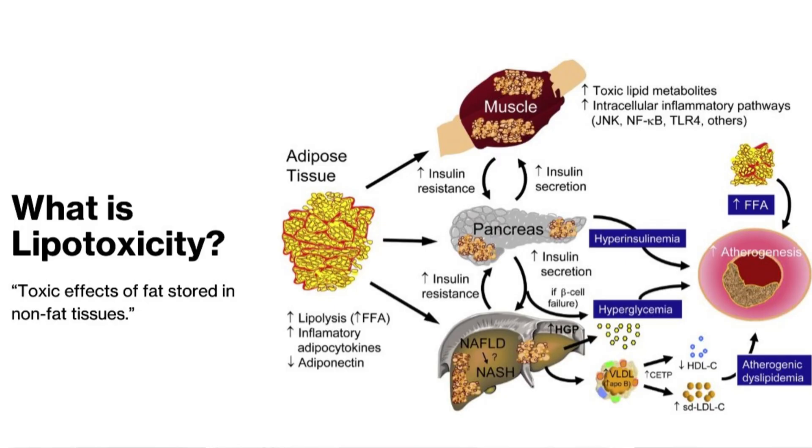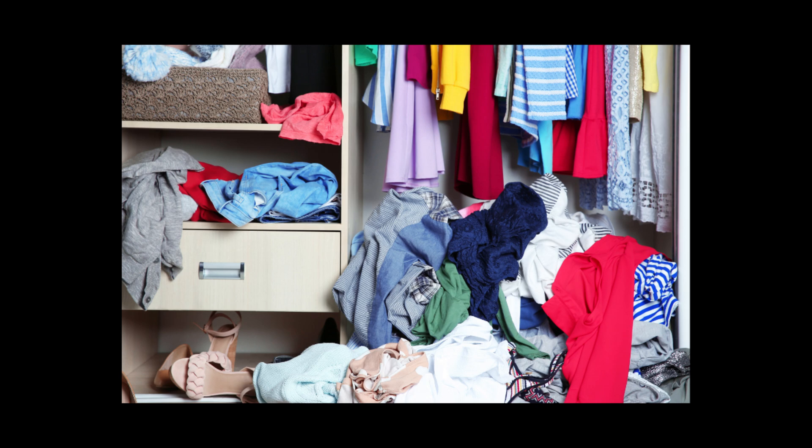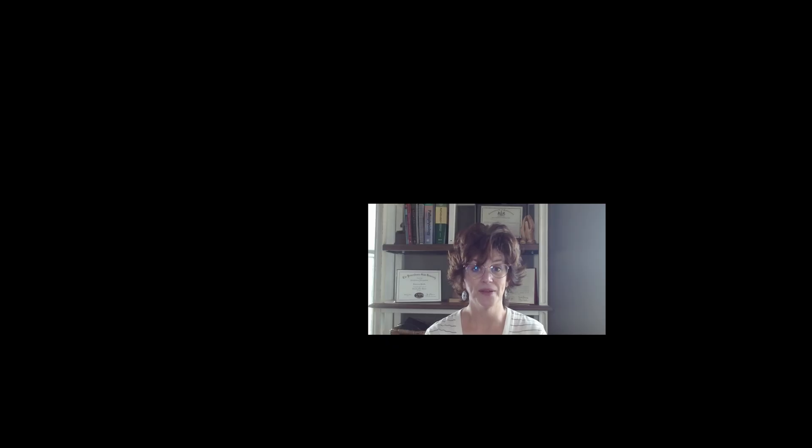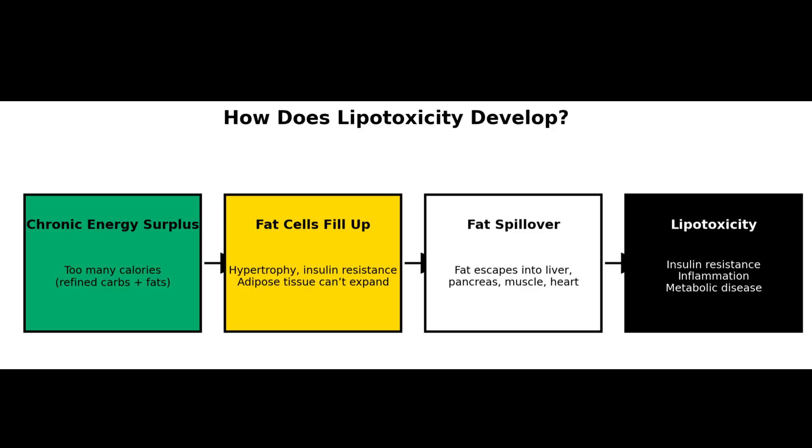Here's an analogy to put it in perspective: think of your fat cells as a closet. When your closet gets full of extra clothes, they don't disappear — they end up on the bed, on the floor, or in the laundry basket. That's lipotoxicity. Now let's talk about how it develops. It's pretty simple: it comes from chronic energy surplus.